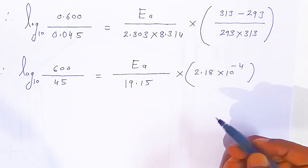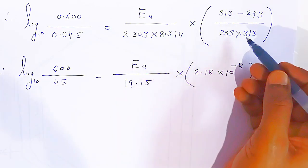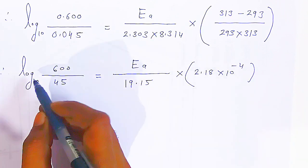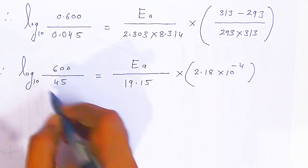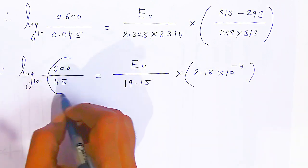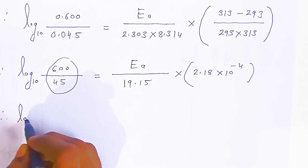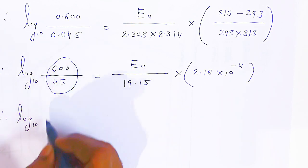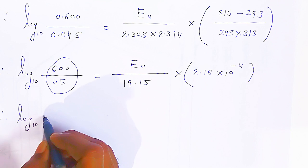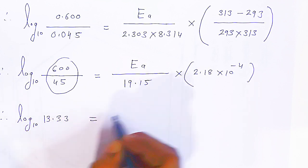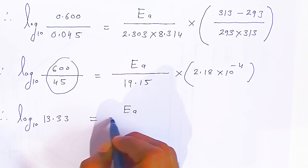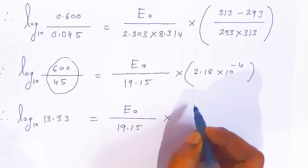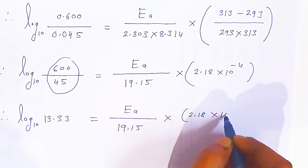Log of 13.33 equals 1.1248 — you find this using the log table by looking up 13 in column 3 and adding the mean difference. So the equation becomes: 1.1248 equals Ea divided by 19.15 into 2.18 into 10 to the power minus 4.